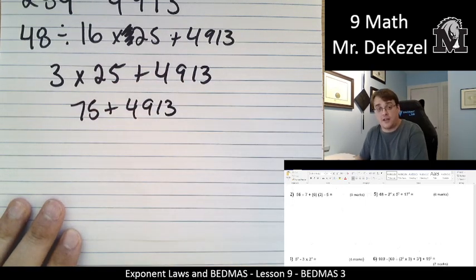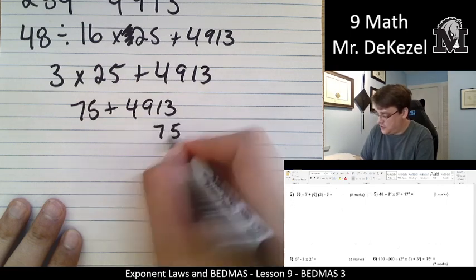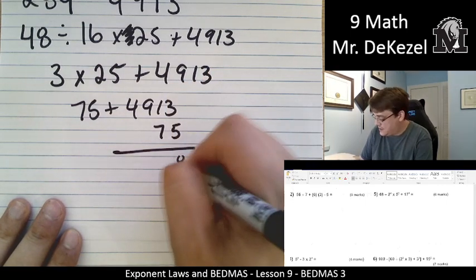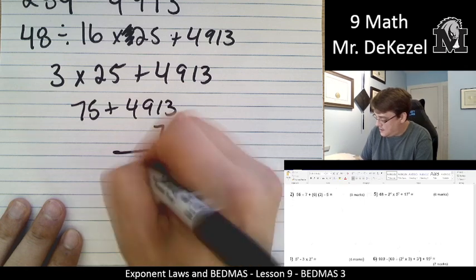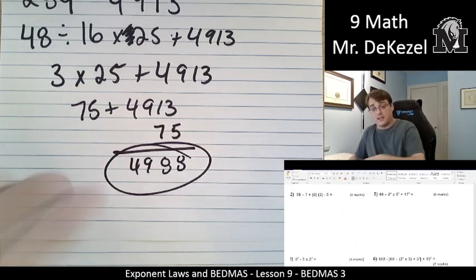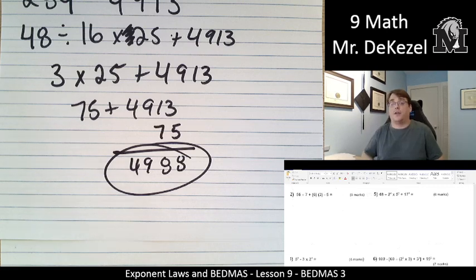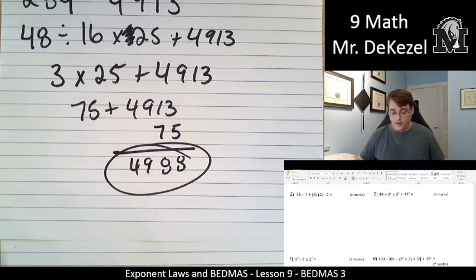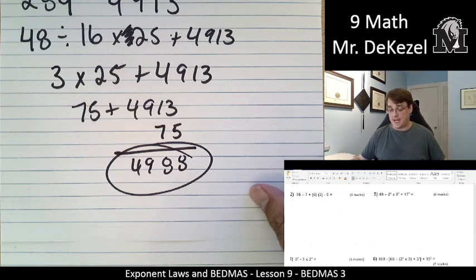3 times 25 is 75. So we're going to add those. I'm going to write this underneath just to make it easy for myself. So 3 plus 5 is 8. Our final answer is 4,988. And although it was a little bit tricky, we were able to do it all without a calculator with a little bit of effort and a little bit of time.